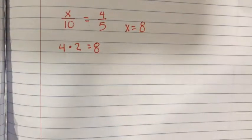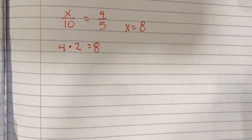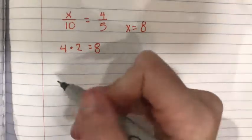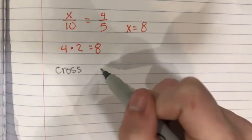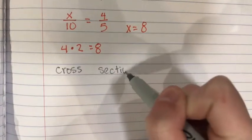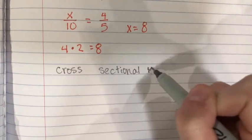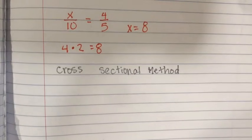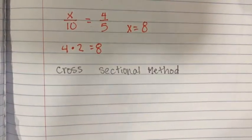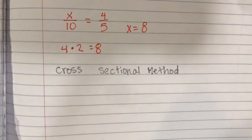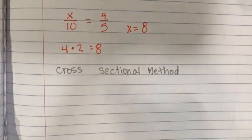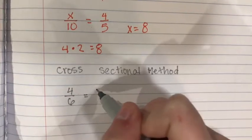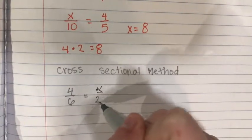And then the last method is called the cross sectional method. The example that we are going to do for this is 4 over 6 equals x over 21.